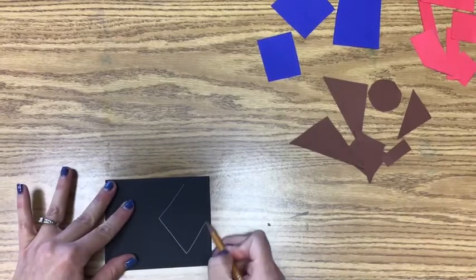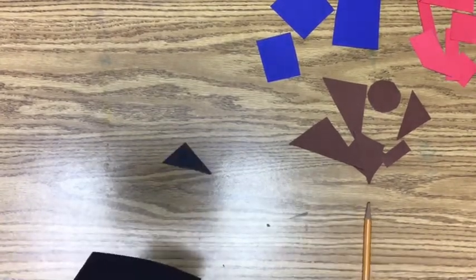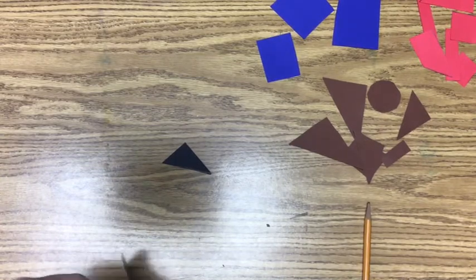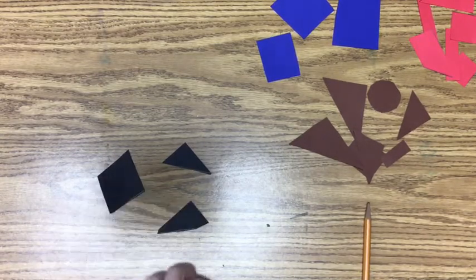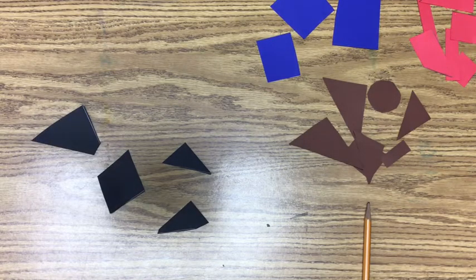Now I'm going to try to cut out a diamond with the black paper. So I draw the shape first and then cut it out using my scissors. I also cut out some different odd shapes with the black paper and I set them all to the side.